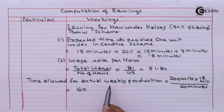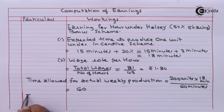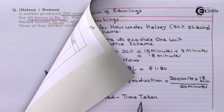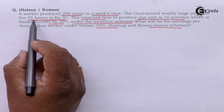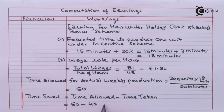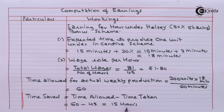Time allowed for actual weekly production is 60 hours — that is 200 units multiplied by 18 minutes divided by 60. Time saved is equal to time allowed minus time taken. Time allowed is 60 hours, time taken is 45 hours, so time saved is 15 hours.